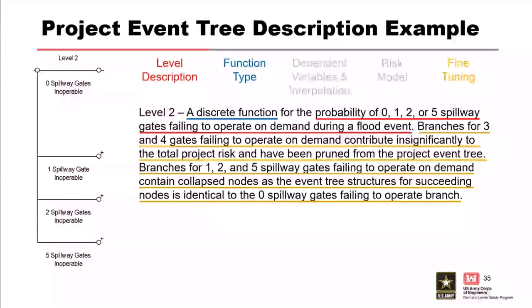For level two, the description covers a discrete function for the probability of spillway gates failing to operate on demand. The three and four gates inoperable scenarios have been pruned because they don't have significant probabilities of occurrence. The one, two, and five gates inoperable branches contain collapsed nodes to signify that the event tree structure for those branches is identical to the zero gates inoperable branch for all succeeding nodes. The event tree description captures the reasoning for pruning and collapsed nodes—specifying that four gates failing contributes insignificantly, and documenting collapsed nodes for one, two, and five spillway gates.